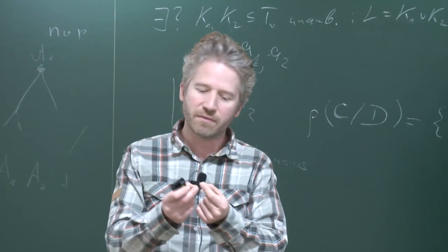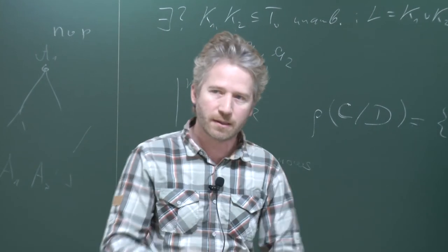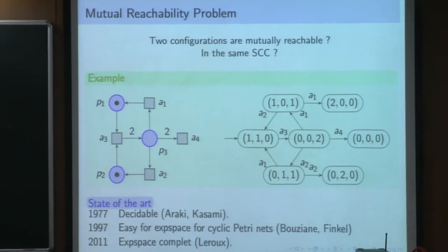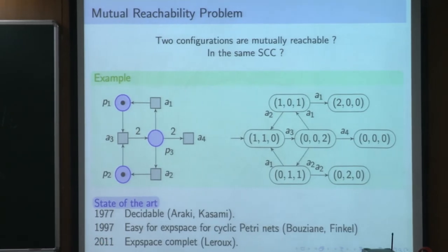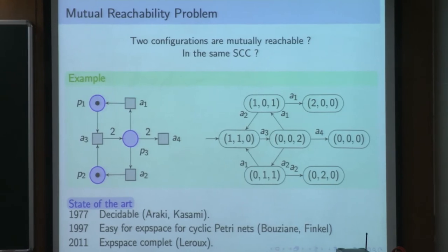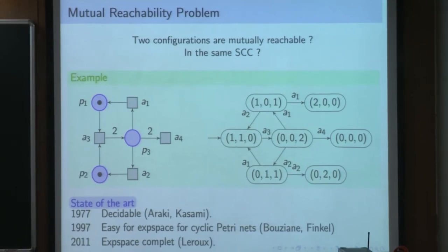For cyclic Petri Nets, meaning that for every action you have another action that performs the converse - mathematically when you have a pair of vectors, you have also the pair where you reverse input and output - this is the definition of reversible. From the mathematical point of view, it means that every pair of markings is mutually reachable.